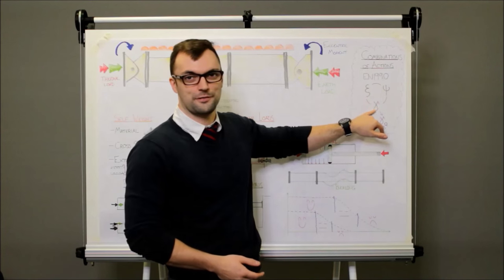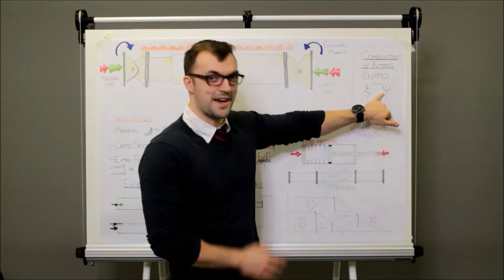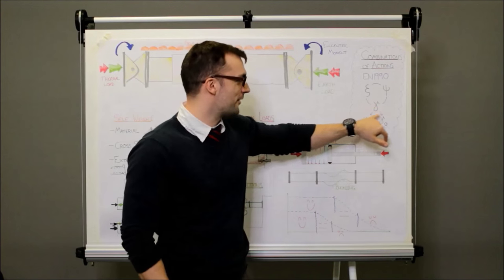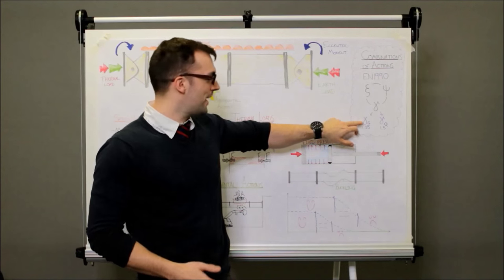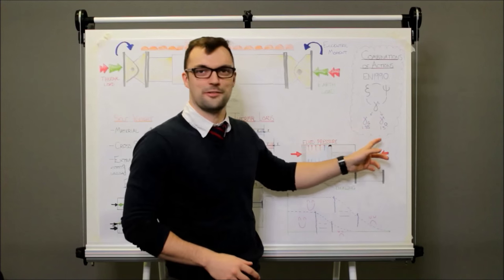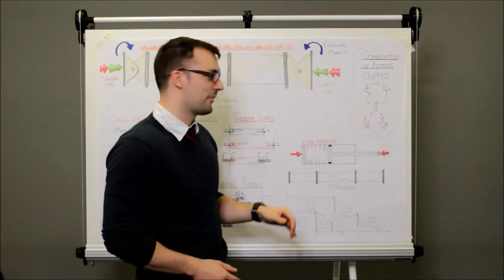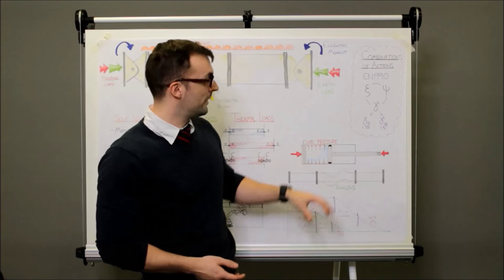You get three flavours of partial factors. Psi, psi, psi, psi and the gamma factors. And even those gamma factors come in different flavours. You have a permanent action gamma factor which is usually 1.35 and you have a variable action gamma factor which is usually 1.5. You also get gamma factors for the materials when you're working out the resistances of the props which I'll come onto in a minute. So far we've just talked about actions.